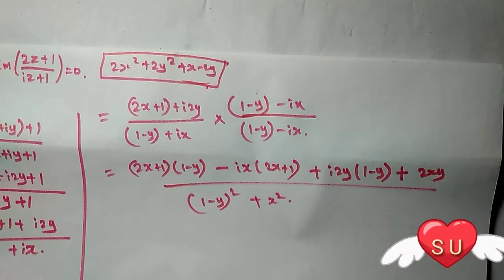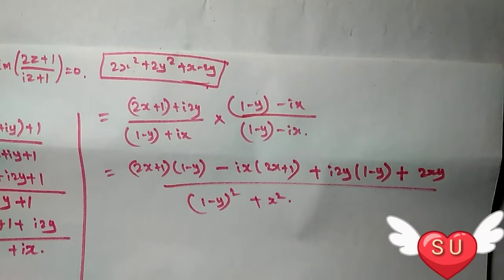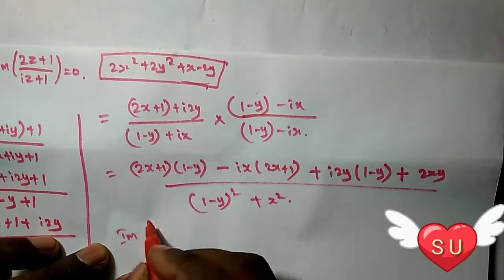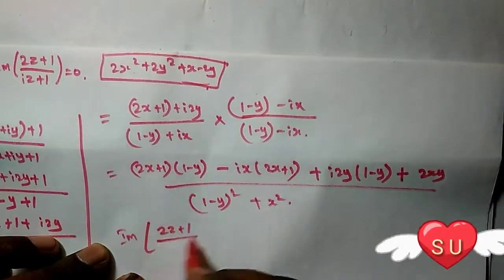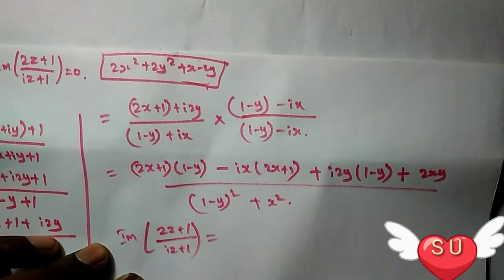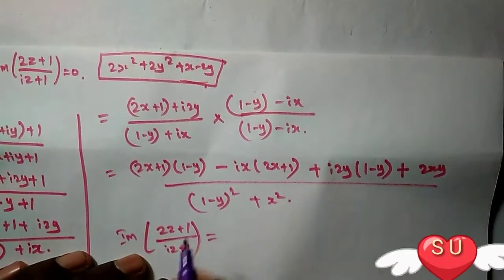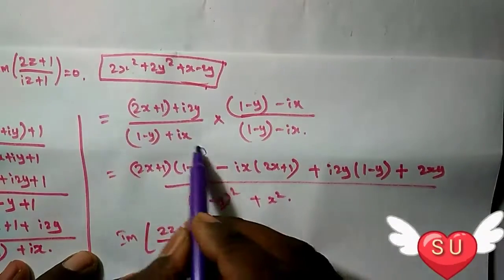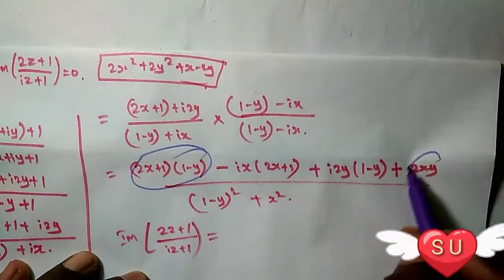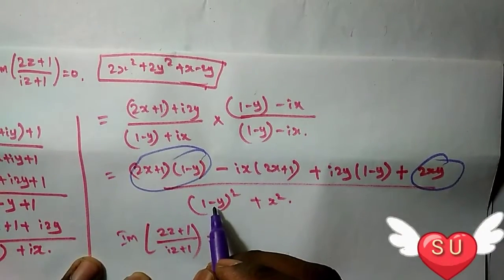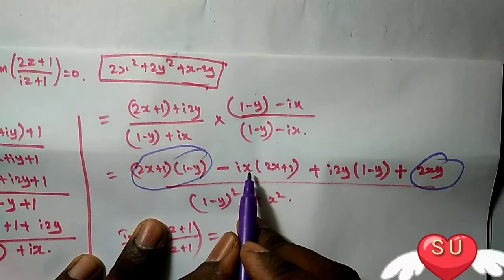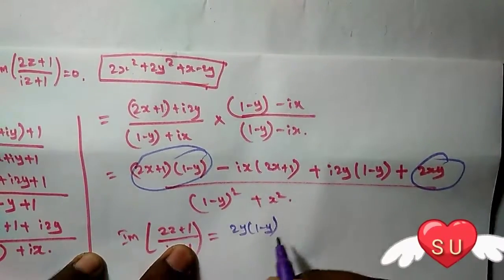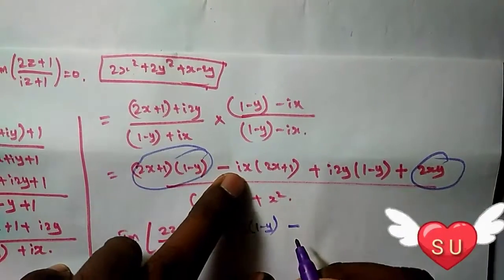Now we need the imaginary part of (2z+1)/(iz+1). The imaginary part is [2y(1-y) - x(2x+1)] divided by [(1-y)² + x²]. We only care about the imaginary part, so the imaginary part is [2y(1-y) - x(2x+1)].